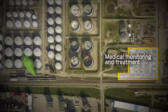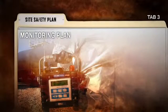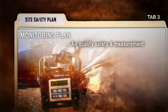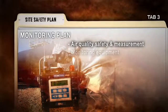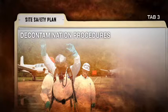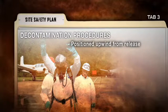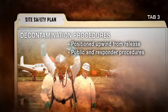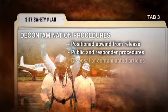This location must be situated away from any hazards as a result of the incident. The monitoring plan will identify how the area will be monitored for air quality safety and measurement, the monitoring equipment necessary and available, and is used in establishing work zones or action levels. A decontamination area should be identified and positioned upwind from the release, with procedures for handling the public and responders in place, as well as disposal of contaminated articles.